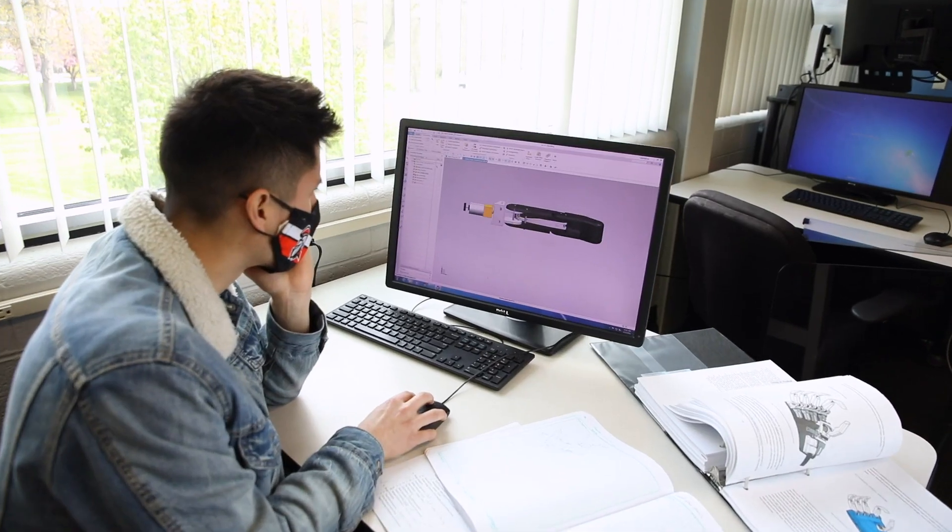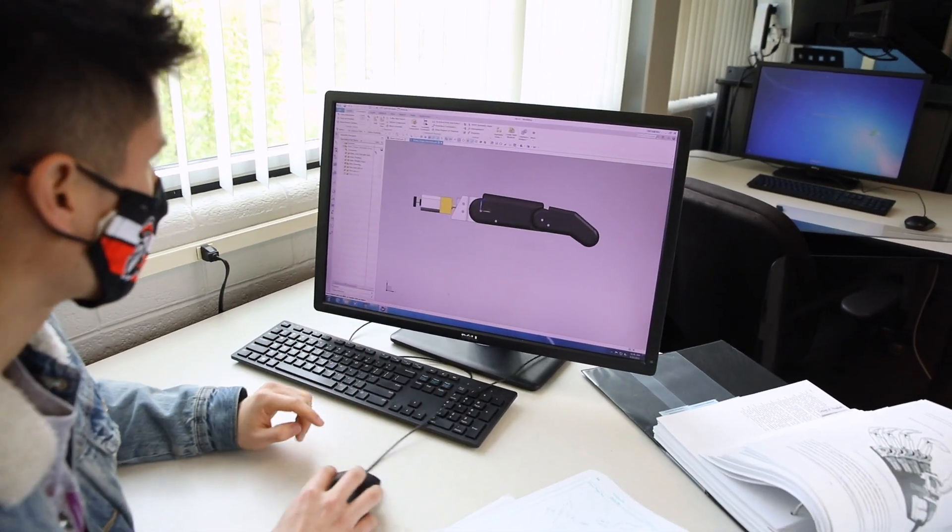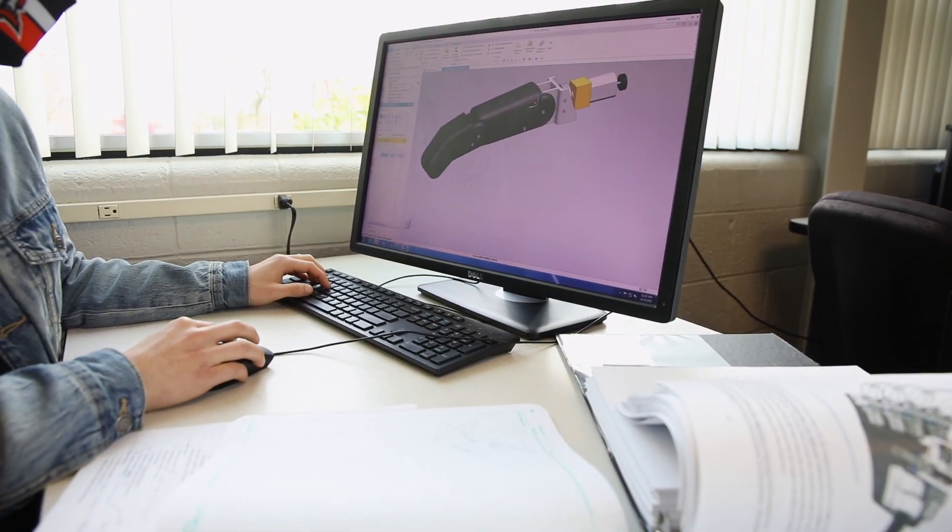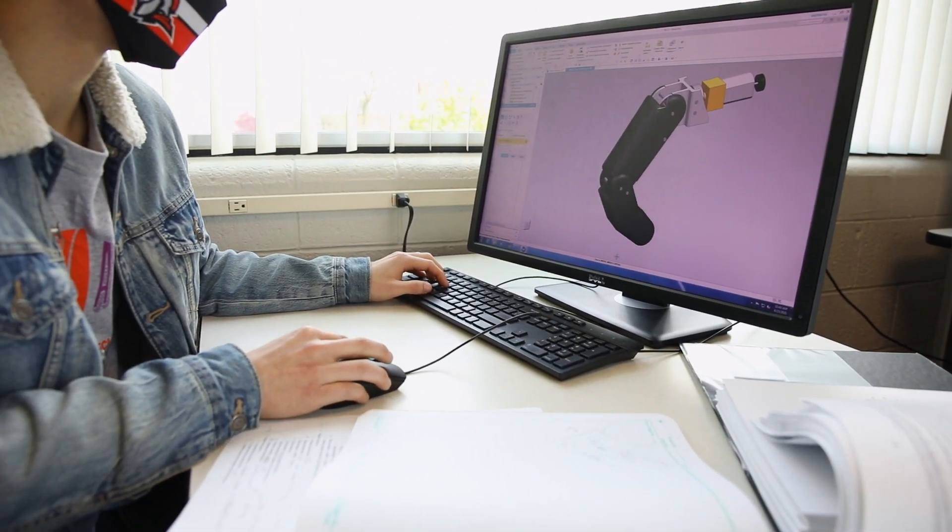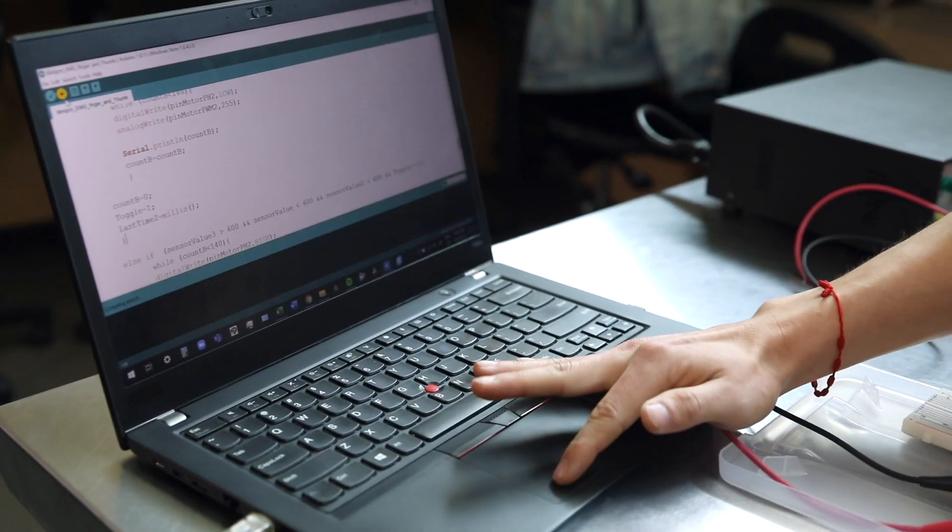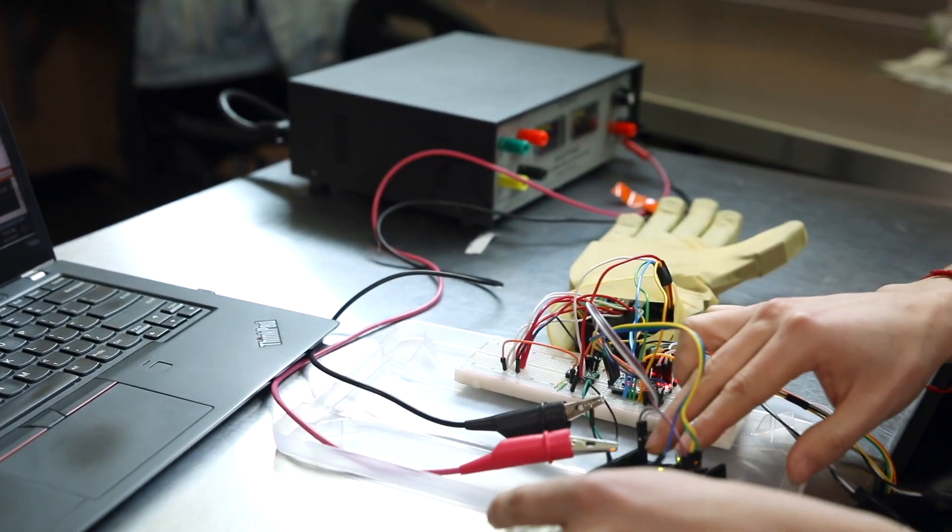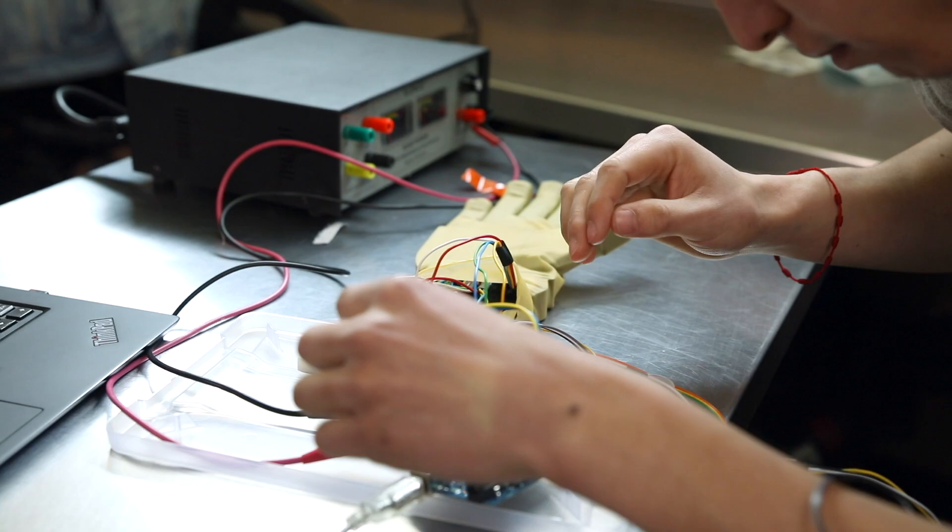To start designing my hand, I started with the finger mechanism, the mechanical part. Once I got that part working I started on the electrical part, and then the electrical part comes along with the programming part because I had to use motors to trigger the finger mechanism.